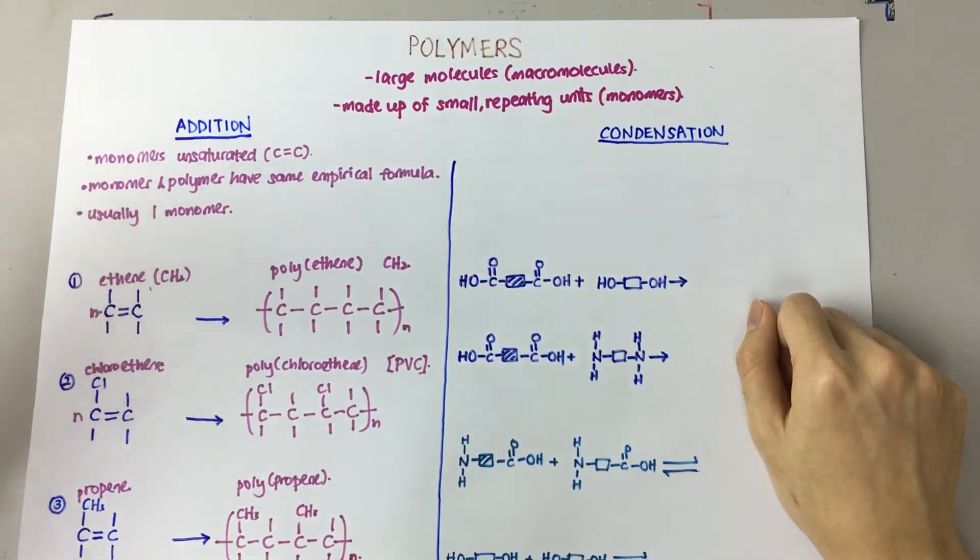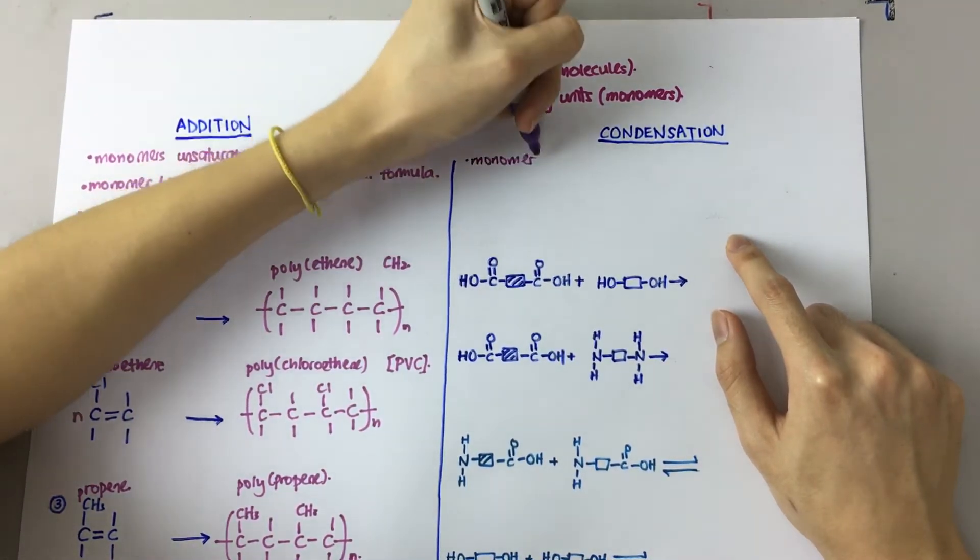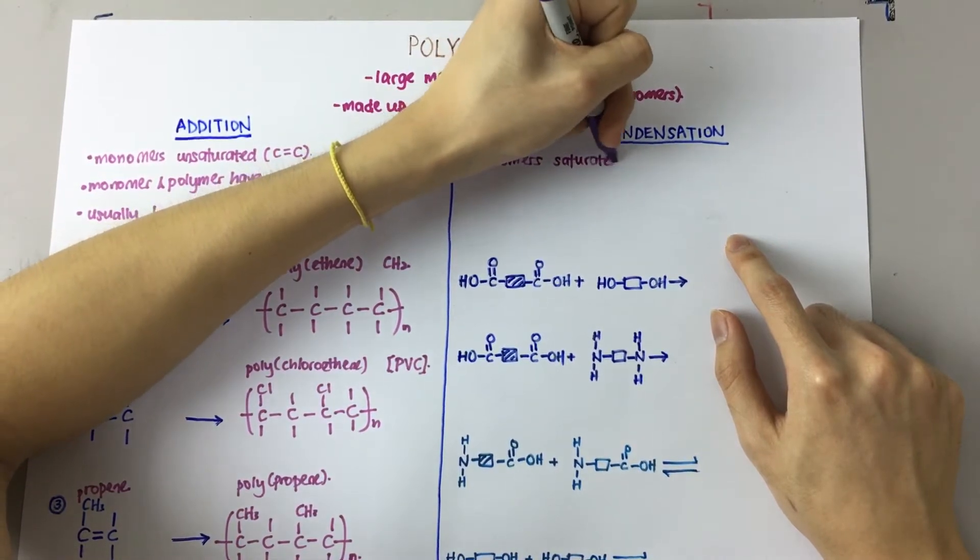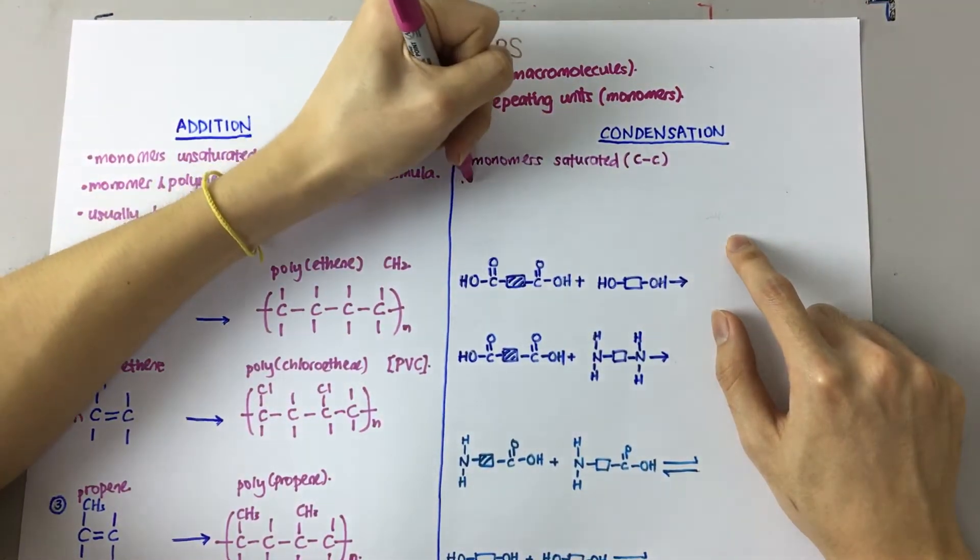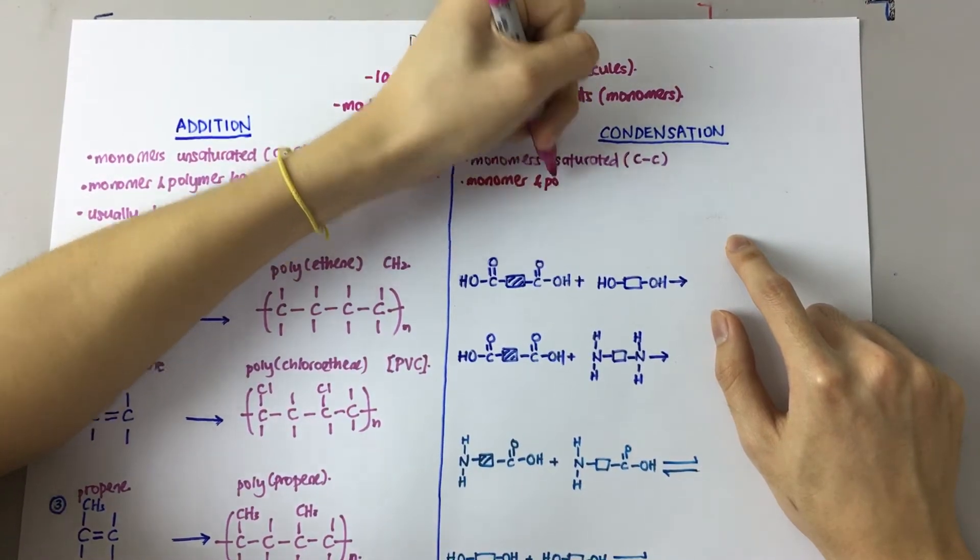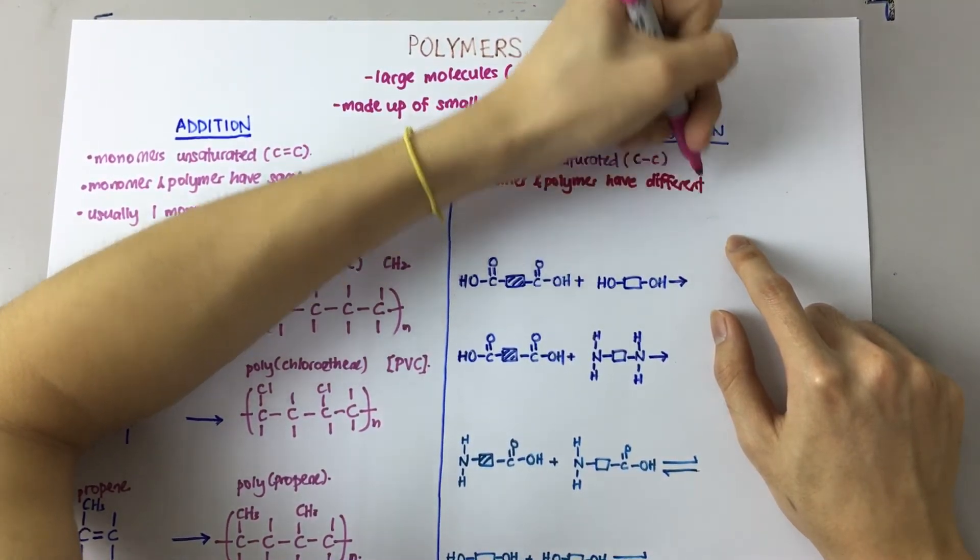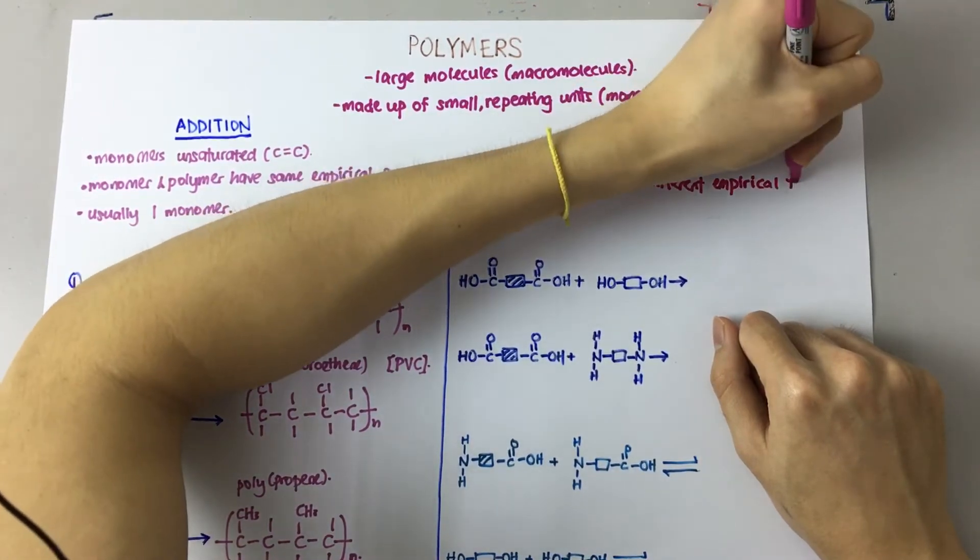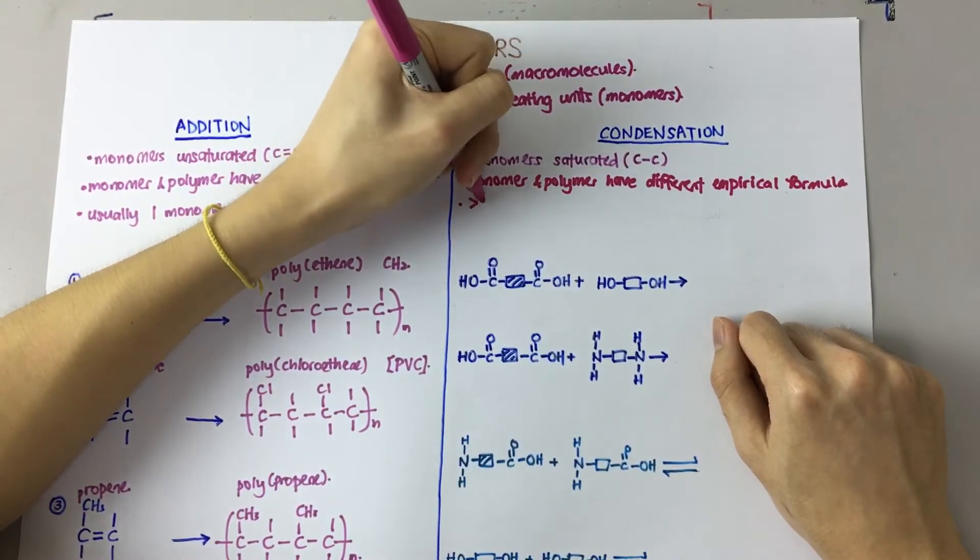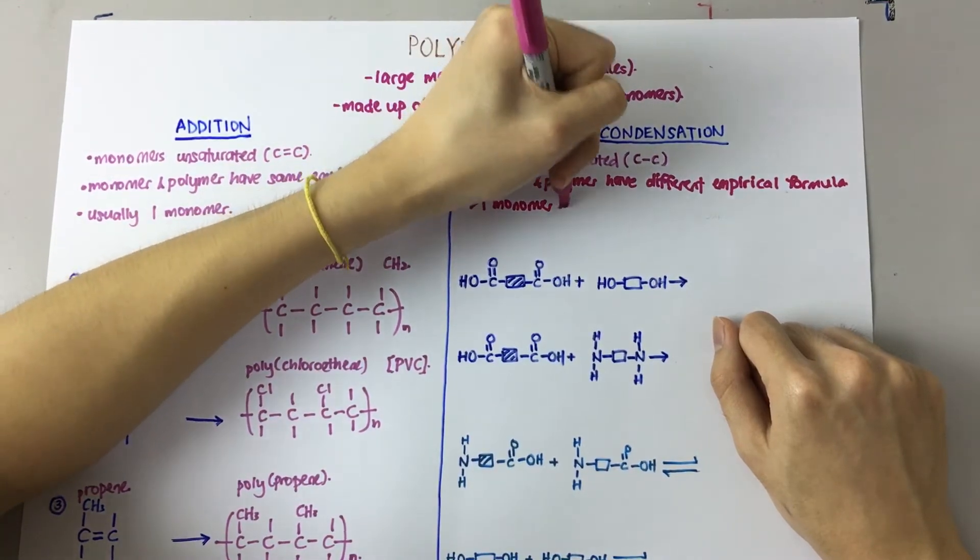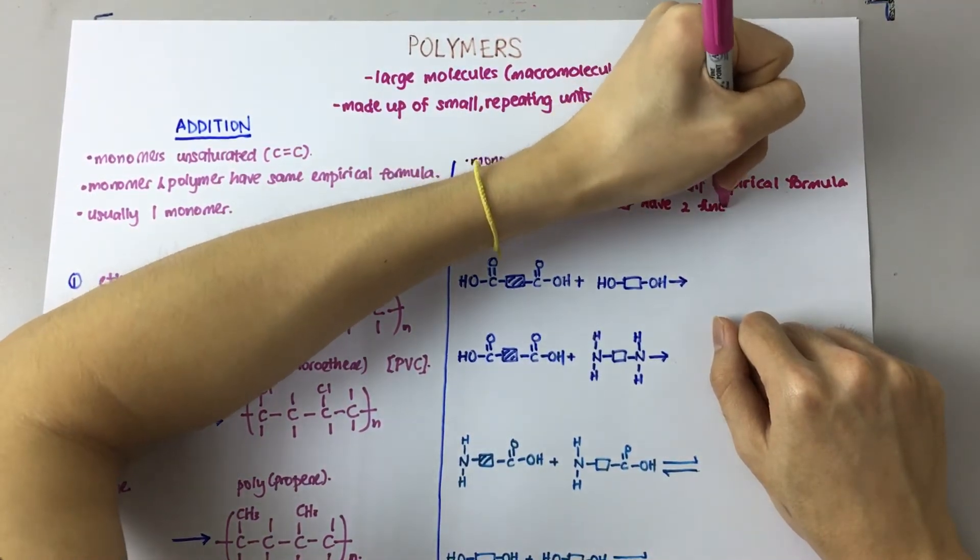Now let's move on to condensation polymers. So, condensation polymers - my monomers are usually saturated. That means I have a carbon-carbon single bond. Now, next, my monomer and polymer have different empirical formula. And thirdly, it's usually made out of more than one monomer, and my monomers have two functional groups.